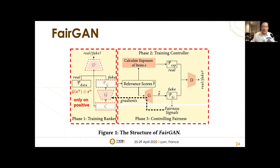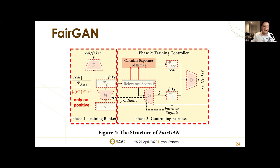Phase two is training the controller of FairGAN. It also consists of a generative model and a discriminative model. To generate fairness signals that help the ranker minimize IED, the controller first calculates the distribution of item exposures based on the relevance scores generated by the ranker's generator G. This calculated distribution is viewed as the target for the controller's generator G. The controller's G takes relevance scores from the ranker's G as input and outputs an exposure dense vector, where elements represent the exposure of items in the ranking.